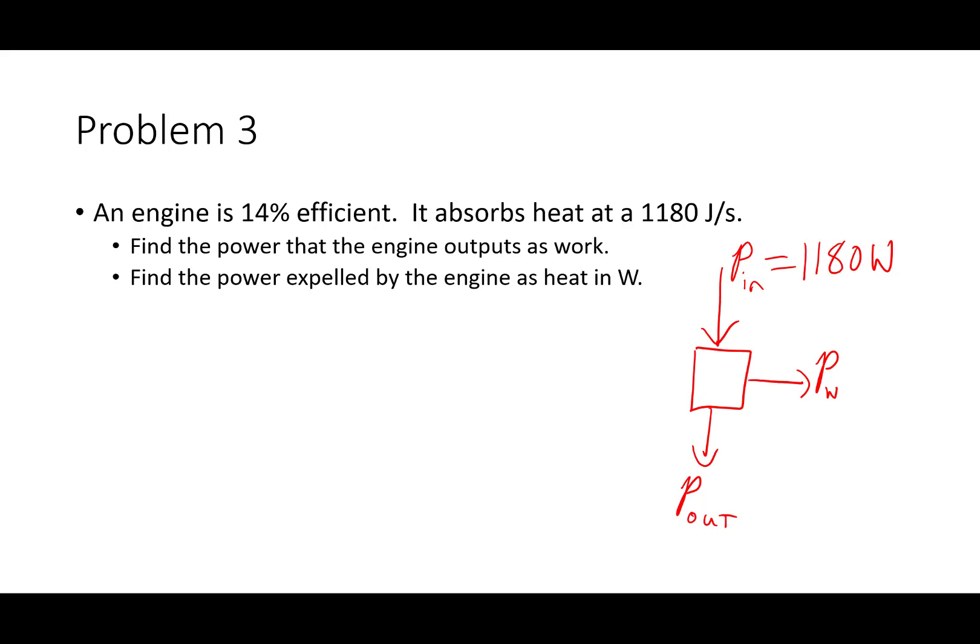We know our engine is 14% efficient. And since we know the total input, we can use that to find the power output for work. We do eta equals useful output, which is work. So that's going to be power due to work over total input, power in. If we solve that for the power from work, we get power from work equals eta, our efficiency, times power in, which is equal to 14% or 0.14 times 1180 watts. Power from work equals 165 watts. I'm going to fill that in my diagram here, 165 watts.